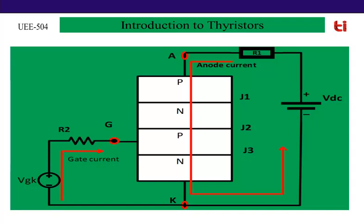Now at the time when thyristor is completely on, we know that the impedance offered by this semiconductor device or thyristor is very low. Then some resistance must be connected to limit this current. That's why resistance R1, or most of the time the load resistance, is connected in series with the circuit to limit the anode current.